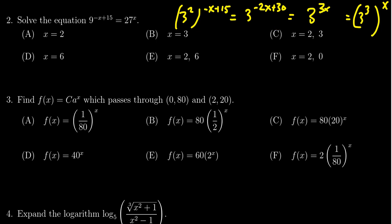Since the bases are now the same, we can cancel out the base and thus get the linear equation, negative 2x plus 30 is equal to 3x. I'm going to add 2x to both sides. This gives me 30 is equal to 5x. And then I'm going to divide both sides by 5, thus giving me x equals 30 over 5, which is 6.